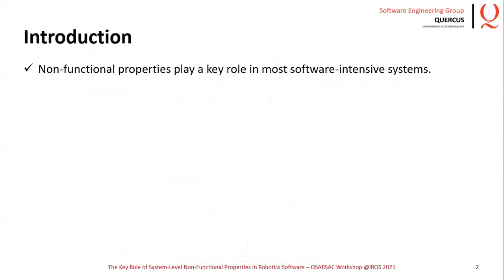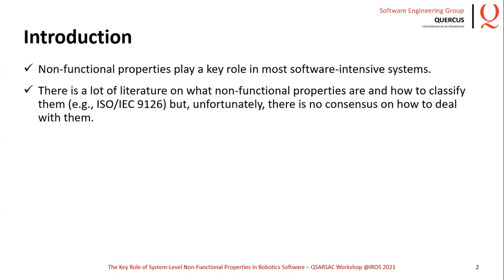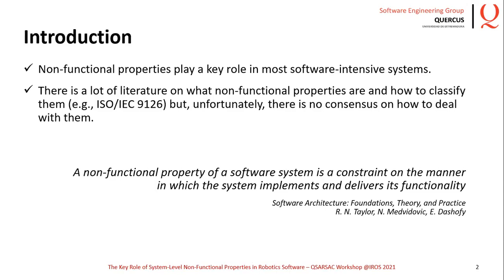Non-functional properties play a key role in most software-intensive systems. While functional aspects deal with what the system does, non-functional ones deal with how it does it. There is a lot of literature on what non-functional properties are or how to classify them, but unfortunately there is no consensus on how to deal with them. Quite frequently, the terms non-functional property and non-functional requirement are considered equivalent, while they are not. For instance, one definition states that a non-functional property of a software system is a constraint on the manner in which the system implements and delivers its functionality.